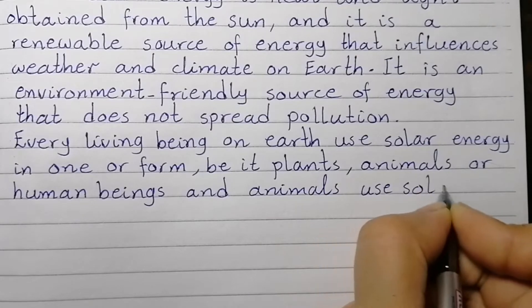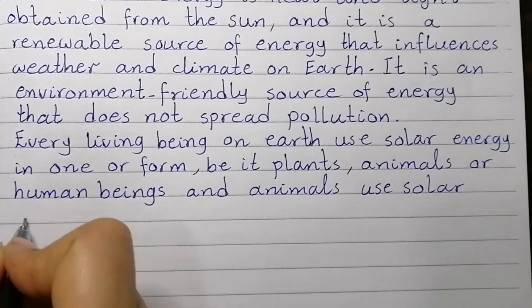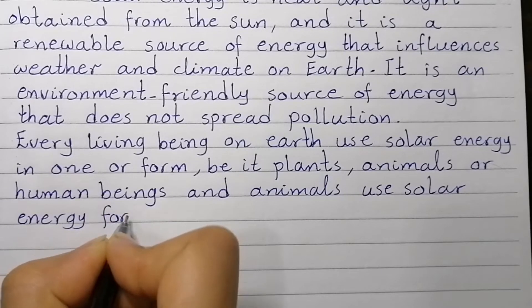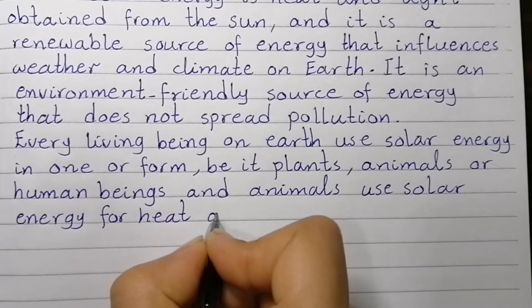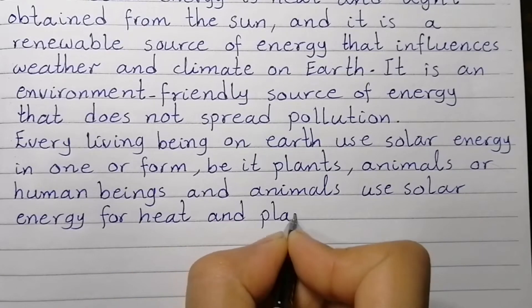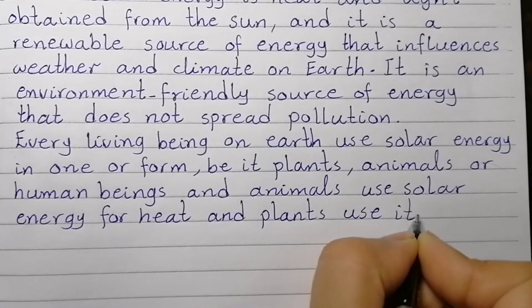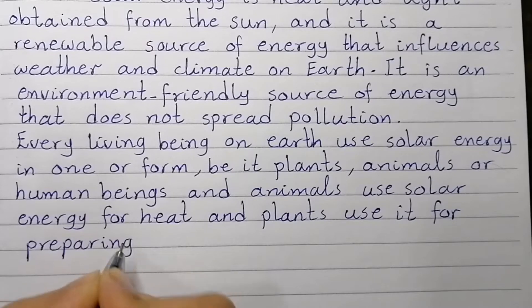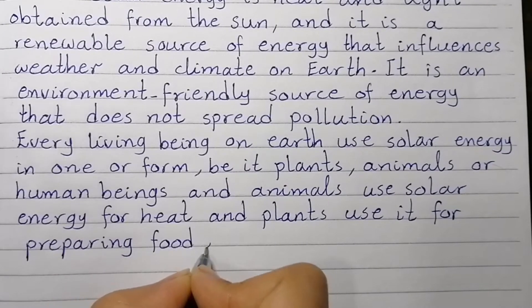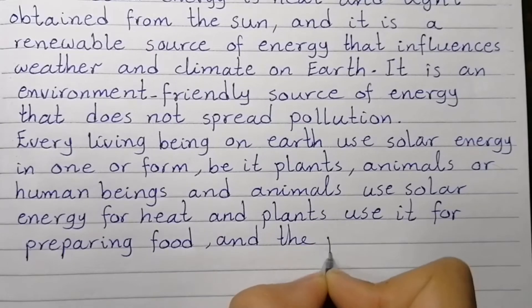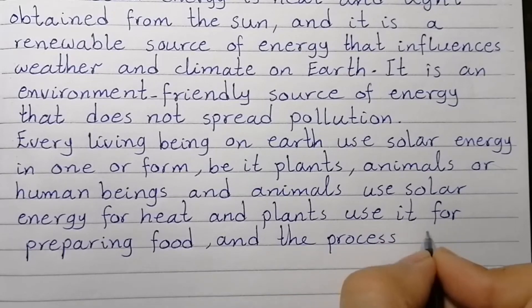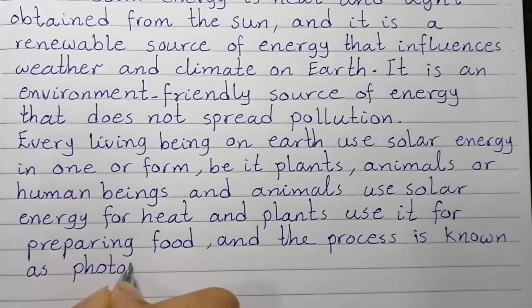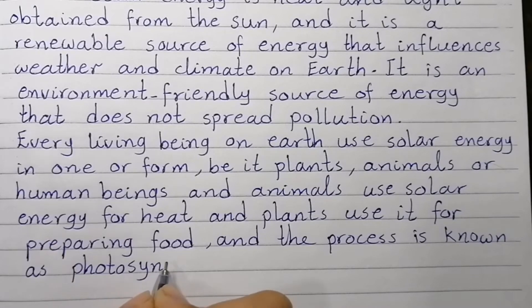Animals use solar energy for heat, and plants use it for preparing food. The process of preparing food is known as photosynthesis.